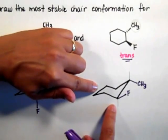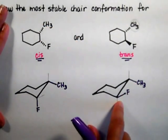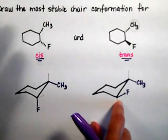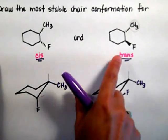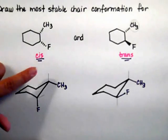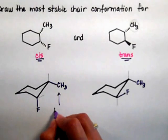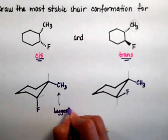If you were to flip this chair to interconvert that chair, you would go to both substituents on axial positions and that would not be good. So this one is the most stable for the trans. This one is the most stable for the cis because the biggest group is on the equatorial position.